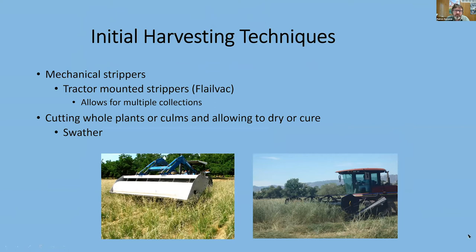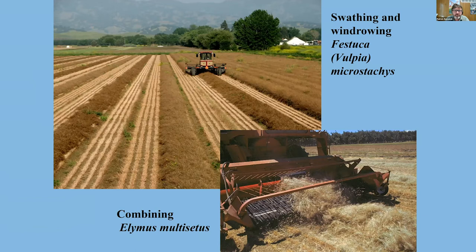Harvesting is a really important part of the process. Whenever possible we use our flailback — a stripper attached to a tractor that gives us the ability to harvest seed on multiple passes, capturing seed during early, mid, and late maturity, so you capture more of the genetic diversity. But often we end up using a swather, which cuts the plant material a few inches off the ground and puts it into a windrow. Once that material dries, it's picked up by a combine.